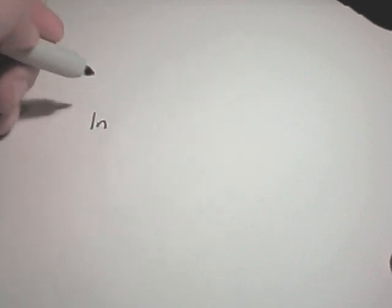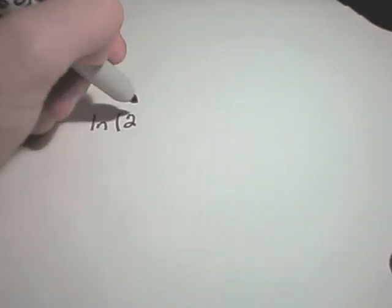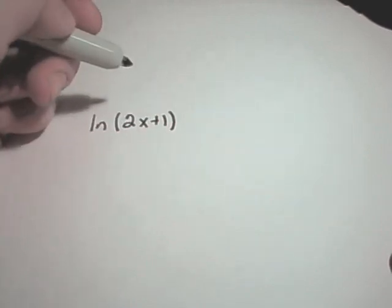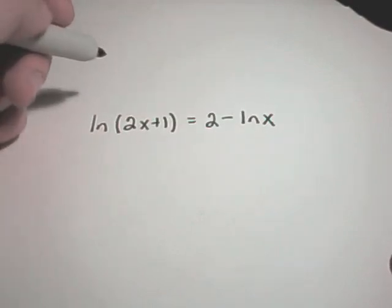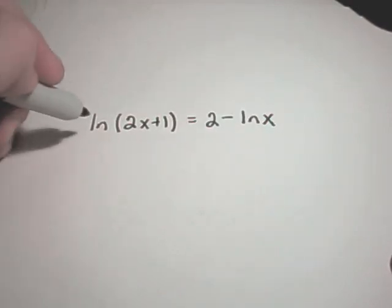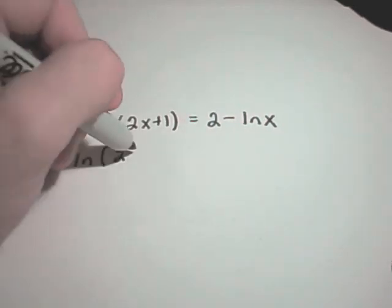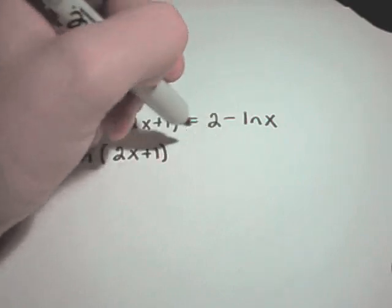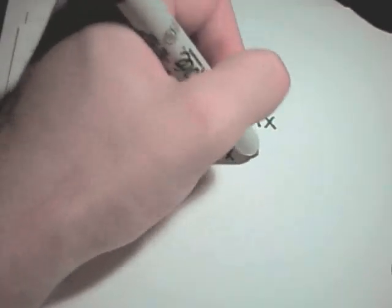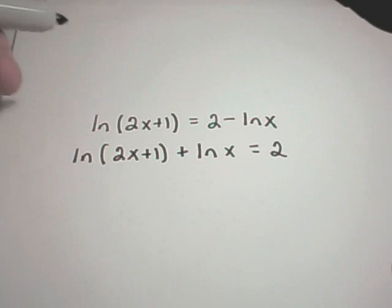Alright, let's keep going here. Suppose I have ln of 2x plus 1 equals 2 minus ln of x. A couple different ways that you could do this one. The way that I'm going to do this problem to start with is I'm going to get my natural logarithms on the same side. So I'm going to add the ln of x over to the left side. And that's equal to 2 on the right side.